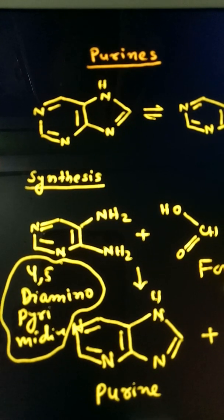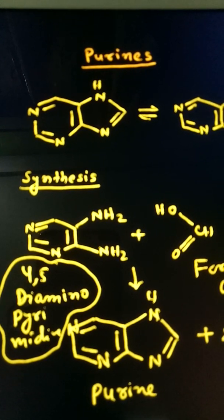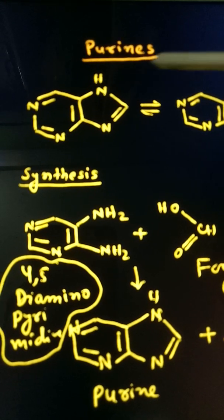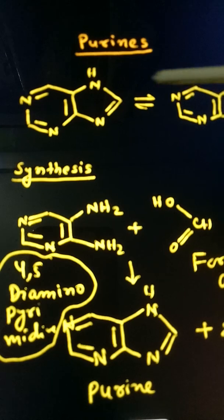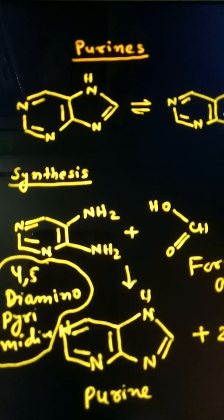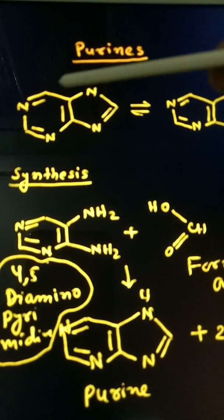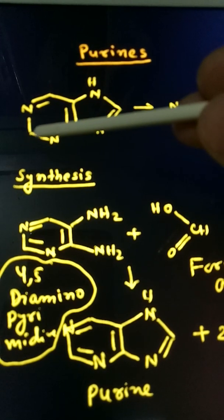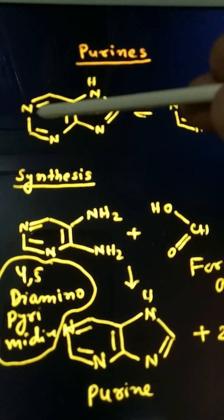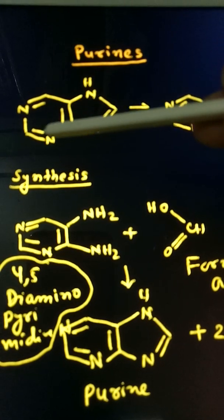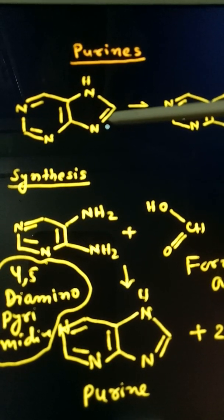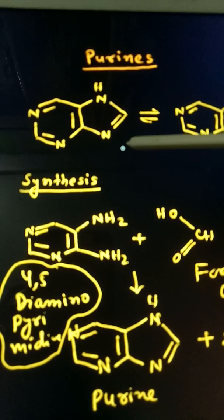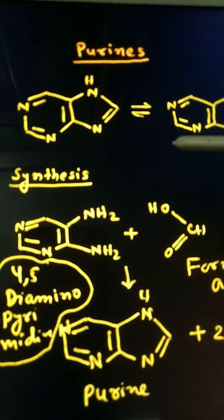So this is purine - it is converted as this nitrogen sometimes comes here, so both structures are possible. This is a 6-member ring. You see this nitrogen, this nitrogen, this carbon - it looks like a urea derivative. This nitrogen and this carbon also look like a urea derivative. So this is also related to ureides.